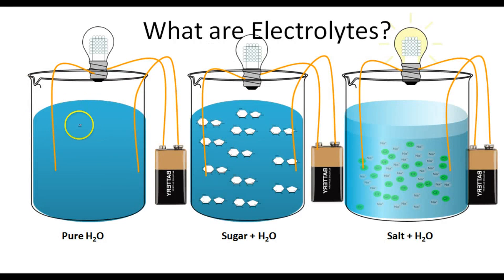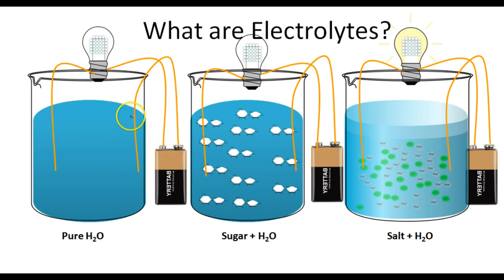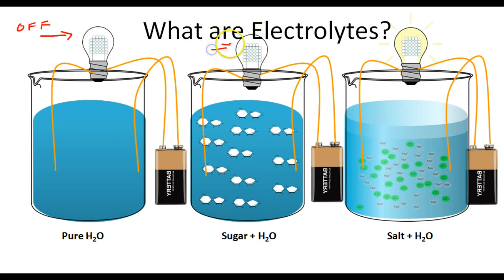If we take a look at these three beakers here, we have a beaker of pure H₂O, a beaker of sugar water, and a beaker of salt water. We notice that in two of these beakers the solution is not completing this circuit — we have copper wire hooked up to a battery hooked up to this light bulb, and in two of these beakers the light bulb is off.